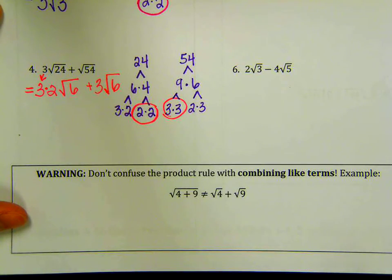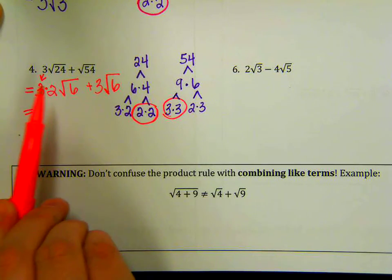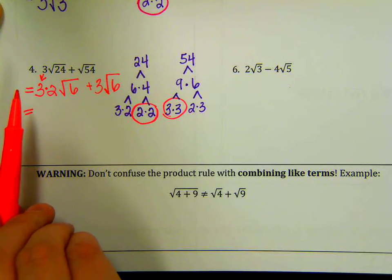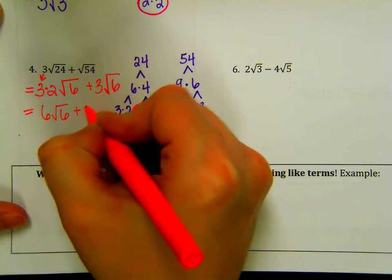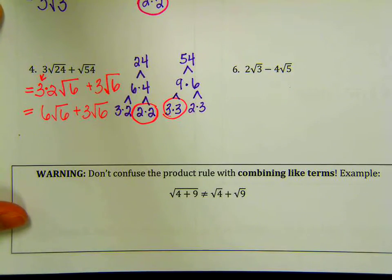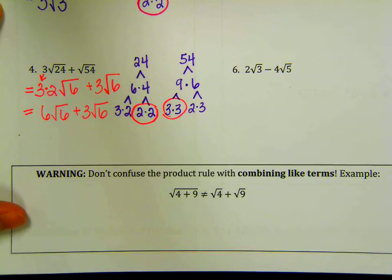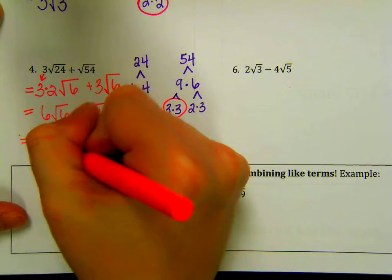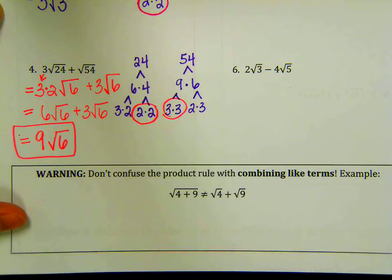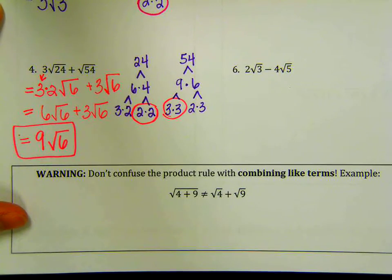Next step, I actually just want to simplify that. So 3 times 2 on the outside here is, what's 3 times 2? 6. Root 6 plus 3 root 6. Do they have the same index? Yes. Do they have the same radicand? Yes. So that means I can add them. What's 6 plus 3? 9. So we have 9 square root of 6. And that's my final. So you have to take what we learned in 8.3 by reducing them, simplifying them as far as you can, and then you can take it a step further and actually add them together.